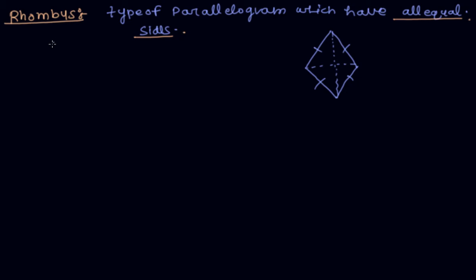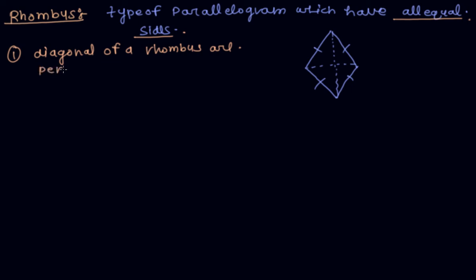One more important property of a rhombus is that the diagonals of a rhombus are perpendicular bisectors of one another.